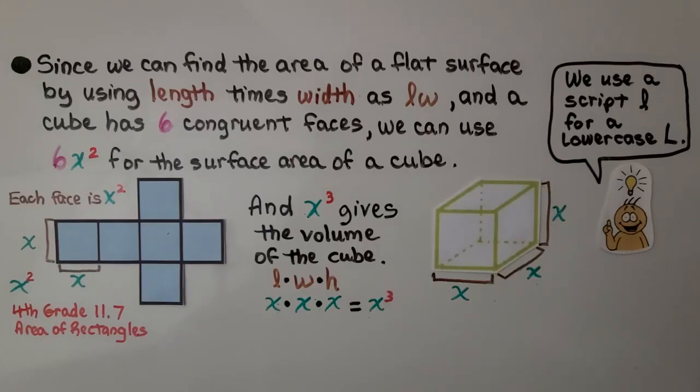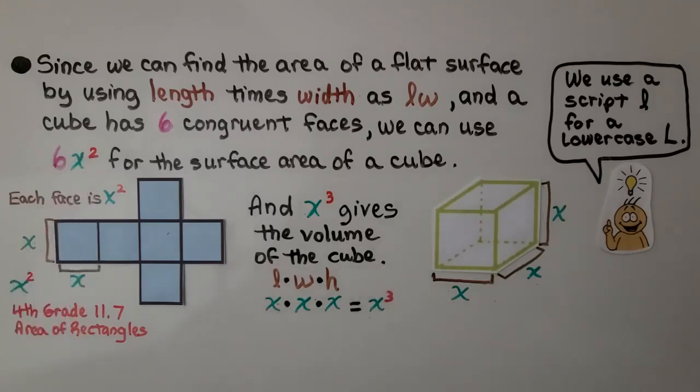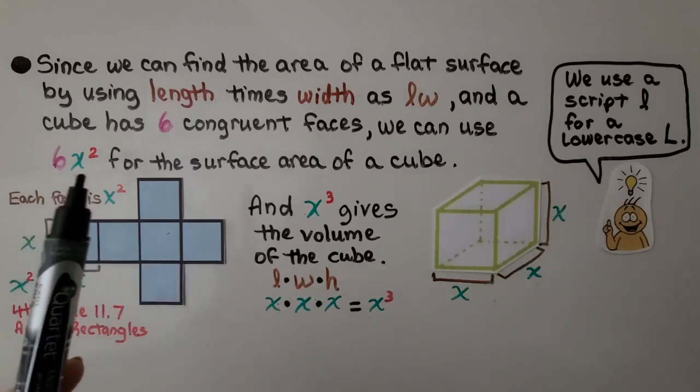Since we can find the area of a flat surface by using length times width, lw, and a cube has six congruent faces, one, two, three, four, five, six, we can use 6x raised to the second power for the surface area of a cube. That's the entire surface area. We have this side as some number x and this side as some number x. The sides are the same length, they're congruent, so we have x squared, x raised to the second power. We learned about that in fourth grade math 11.7. Length times width. So each face is x squared, or x raised to the second power. So if we have six of them, we have six times x squared.